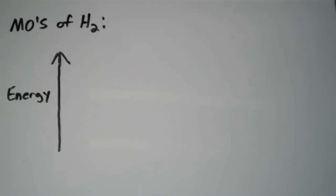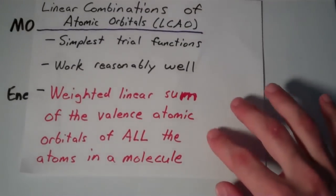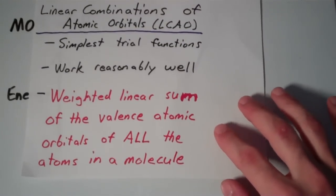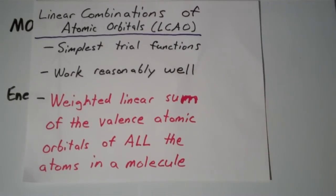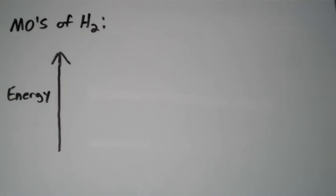In this video we're going to continue our discussion on molecular orbital theory by talking about the molecular orbitals of the H2 molecule. Remember that molecular orbitals are actually linear combinations of atomic orbitals — a weighted linear sum of the valence atomic orbitals of all the atoms in a molecule. H2 is a very simple case because a hydrogen atom just has one electron, and that one electron sits in a 1s orbital.